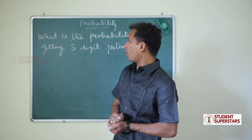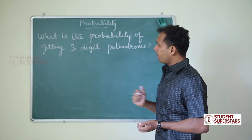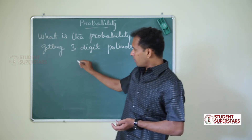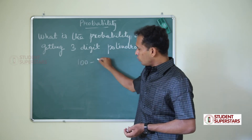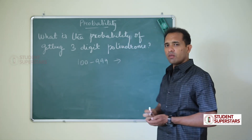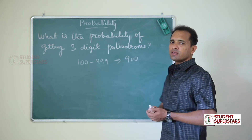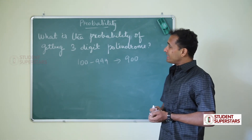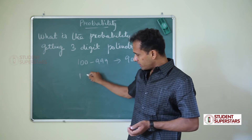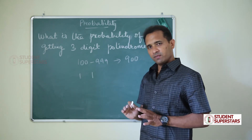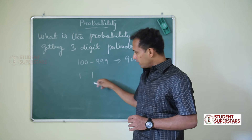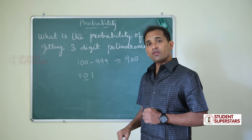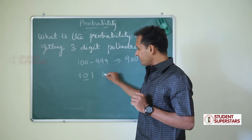Next question: what is the probability of getting a three-digit palindrome? There are three-digit numbers starting from 100 to 999, so the total is 900. That is our number of samples. We need to find the number of events — three-digit palindromes. The first digit and last digit should be the same. If the first digit is 1, the last digit is also 1, and the middle digit can be 0, 1, 2, 3, 4, 5, 6, 7, 8, or 9 — so 10 ways.